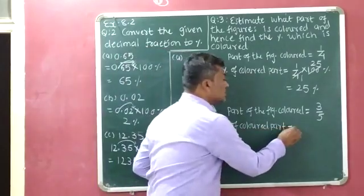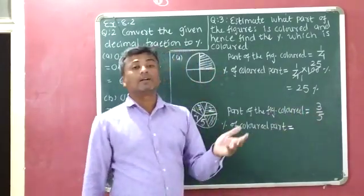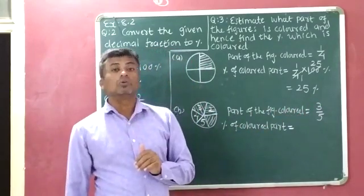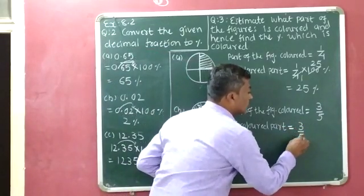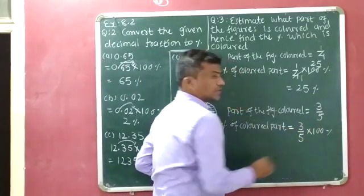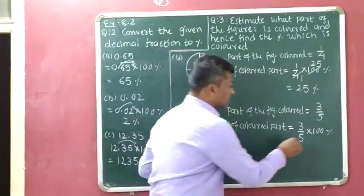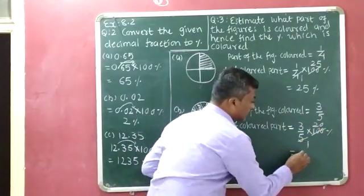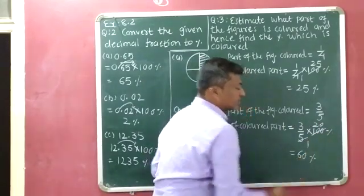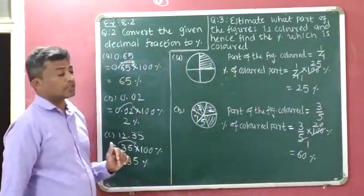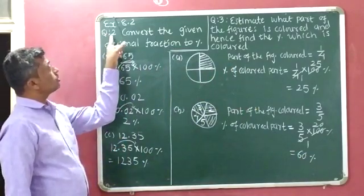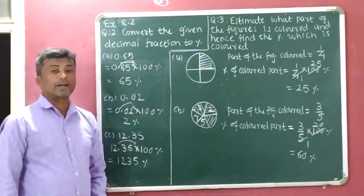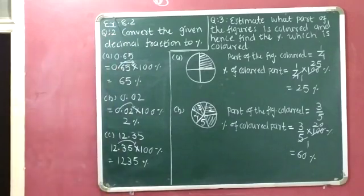Now the percentage of the colored part equals 3 by 5 multiplied with 100%. Since 5 and 100 can be cancelled — 5 ones are 5, and 20 fives are 100 — so 20 multiplied by 3 gives 60. The final answer is 60%. This completes the explanation of question number 2 and question number 3 of exercise 8.2. I hope you understood. Thank you.